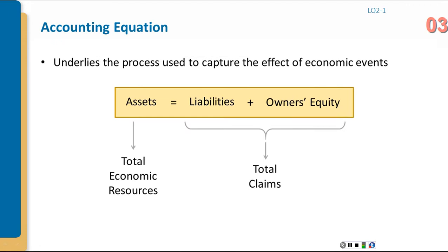The accounting equation: total assets must equal total liabilities plus owner's equity. Assets are the economic resources — things the company owns, has access to, or controls. Liabilities are things owed, such as notes to banks and vendors. Owner's equity has two components: paid-in capital and retained earnings. Liabilities plus owner's equity represent total claims against the assets — people who have a stake in and a claim on the company.